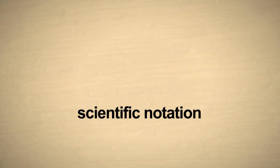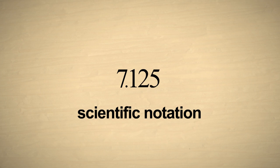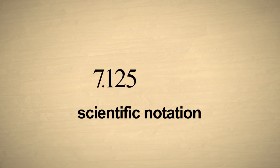Numbers written in scientific notation consist of two parts. The first part, which can be positive or negative, is written as a single digit, which can optionally be followed by a decimal point and one or more additional digits. The second part is a multiplier for the first part. This multiplier is always written as ten with an integer exponent. Since the exponent can be positive or negative, the multiplier can make the number as large or small as we like.